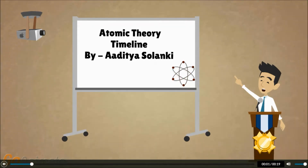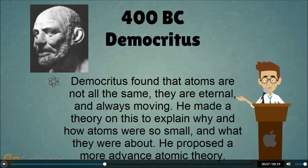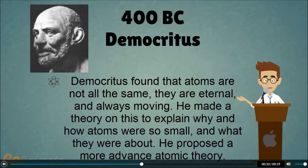Atomic Theory Timeline by Aditya Solanke. Democritus found that atoms are not all the same, they are eternal, and always moving. He made a theory on this to explain why and how atoms were so small, and what they were about.